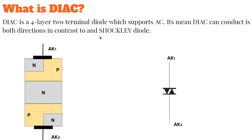So what is DIAC? DIAC is basically a four-layer, two-terminal diode which supports alternating current. This is the major difference between DIAC and the Shockley diode. The Shockley diode was not able to conduct current in the reverse direction — it was unidirectional — but the DIAC is bidirectional. If you divide its name into two parts, DI and AC: DI stands for diode and AC stands for alternating current. So a diode which can support alternating current is known as DIAC.